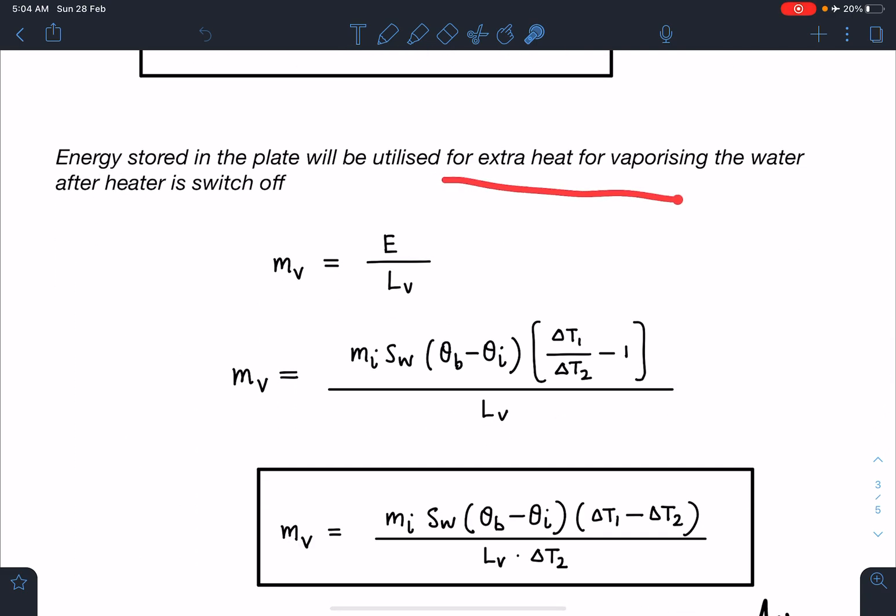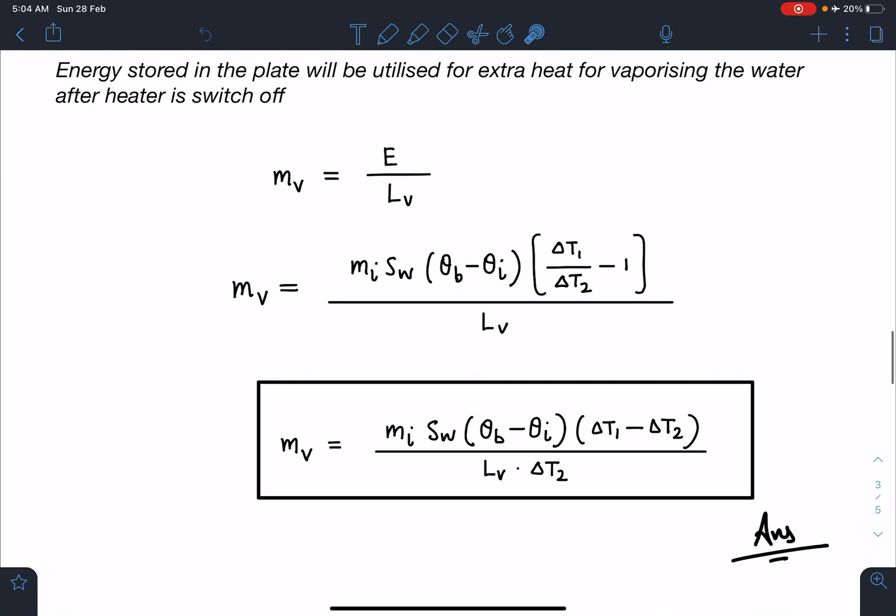After heater is switched off, the mass of vaporized water is going to be the energy from the plate divided by latent heat. When I substitute the value, I'm going to get M_v = m_i·s_w·Δθ·(Δt₁ - Δt₂)/(L_v·Δt₂). This is going to be the final answer for this problem.